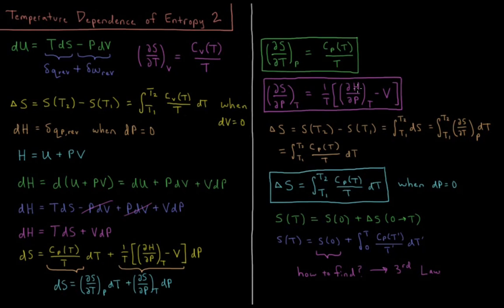For an ideal gas, this derivative — (∂H/∂P)_T — is going to end up being zero, so you end up just getting minus V over T. So what do we get when we want to calculate the entropy change between two temperatures at constant pressure? We have a similar expression to the constant volume case. Delta S being a state function is the final entropy minus the initial entropy, S(T2) minus S(T1), or the integral from T1 to T2 of dS — equal to the integral from T1 to T2 of the partial derivative of S with respect to T at constant pressure times dT.